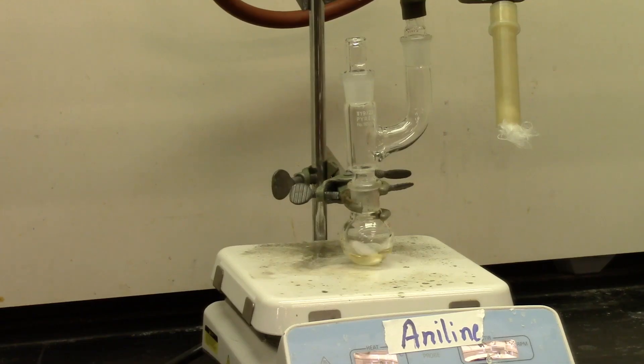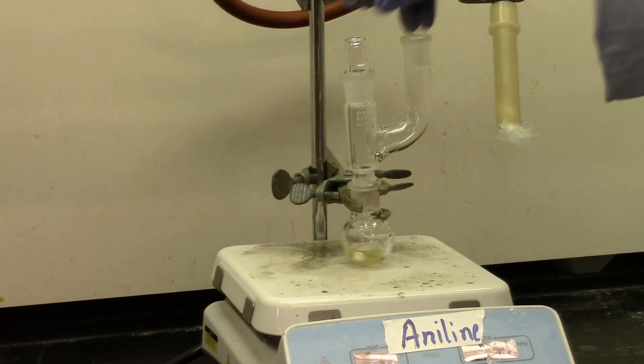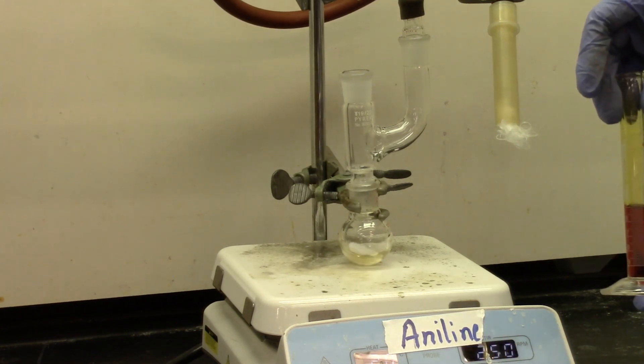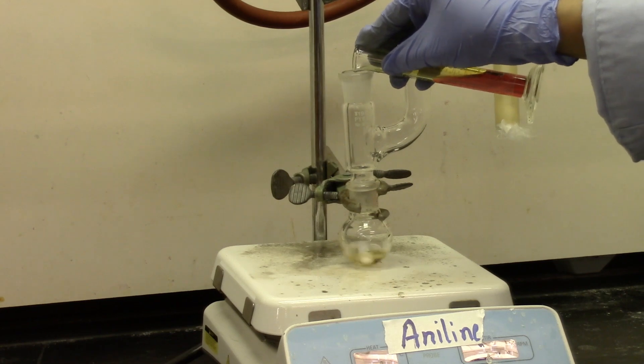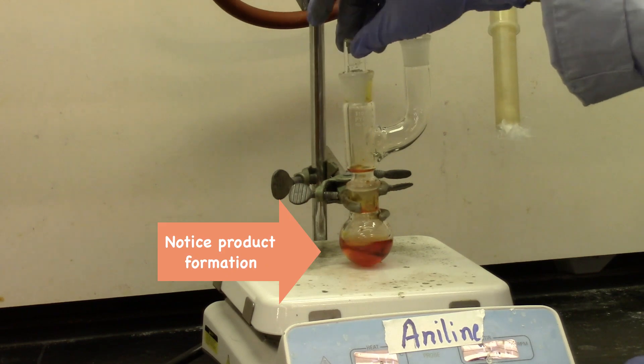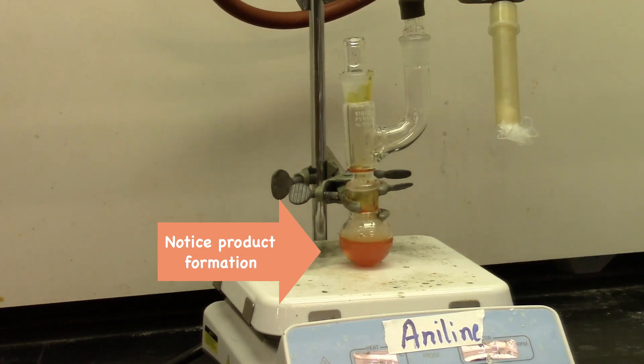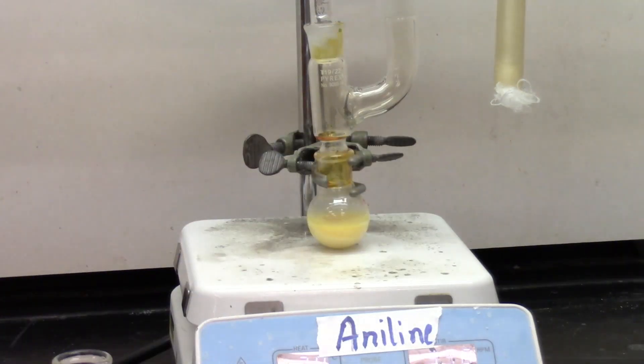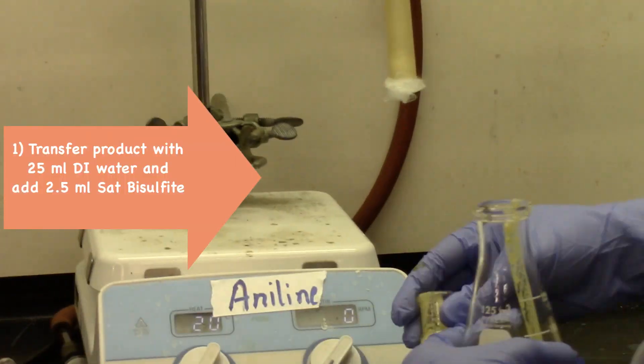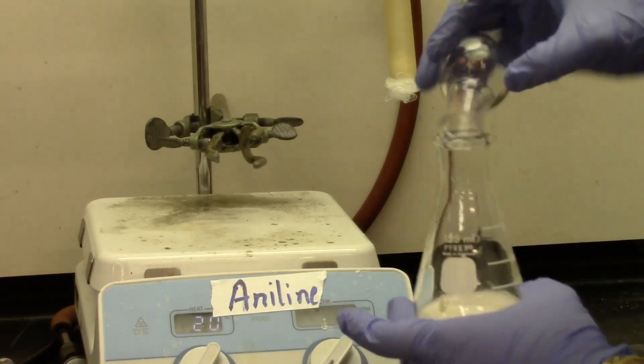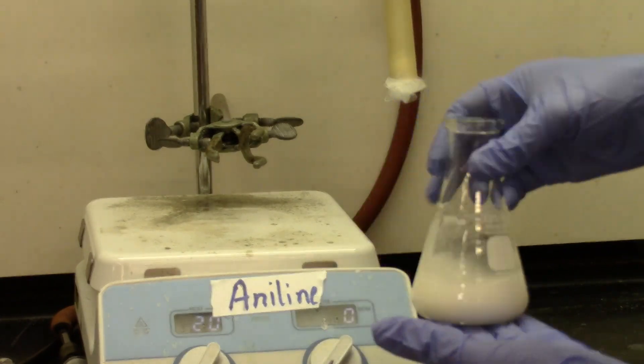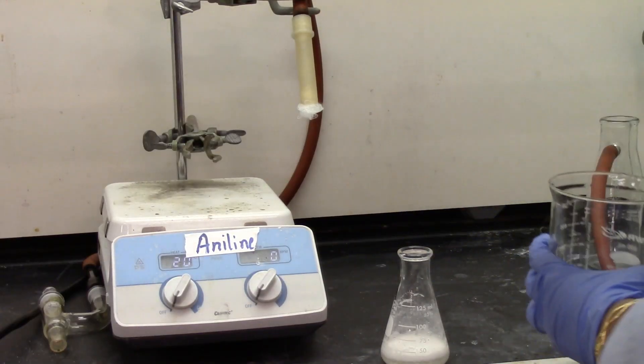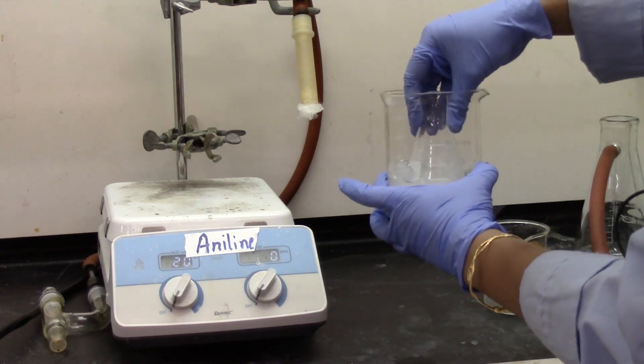So this is the aniline reaction. The aniline stirring with the acetic acid. Now I'm going to add my HBr bromine mixture. This is 5 ml. I'm going to pour it down the Claisen head. It's been about 20 minutes. I'm going to turn off the stirring and transfer this reaction mixture. This is aniline, as you can see it's labeled. I'm going to transfer it to a 125 ml Erlenmeyer flask.